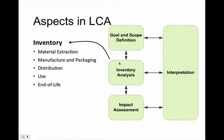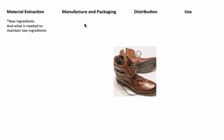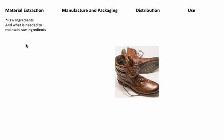What we're going to focus on is the inventory analysis and go through each of the five steps. For material extraction, the questions you're really asking are: What are my raw ingredients? What is needed to maintain these raw ingredients? Maintaining can involve fertilizers, land, machines of other sorts.